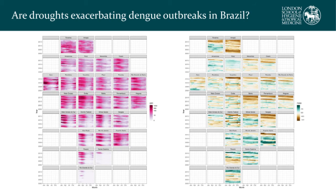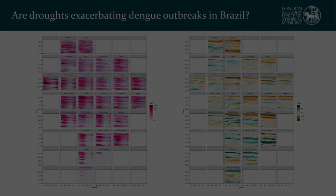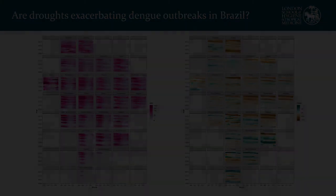We've been taking that example from one small island developing state and expanding this approach for the whole of Brazil, which has a very varied geography and different socioeconomic conditions. We want to understand if the increased frequency of drought we're seeing, particularly in the northern regions, is having an impact on dengue epidemiology in Brazil.